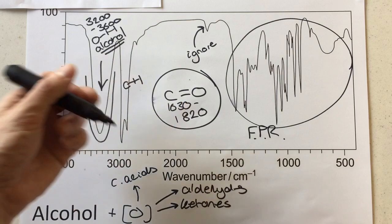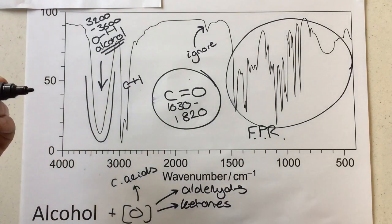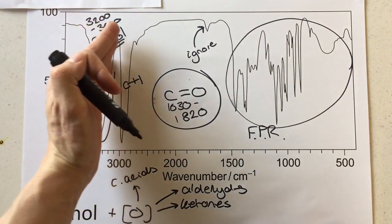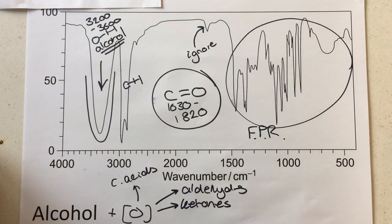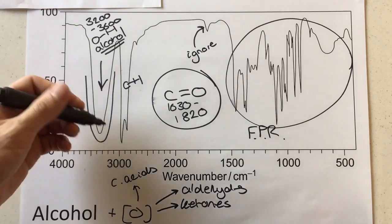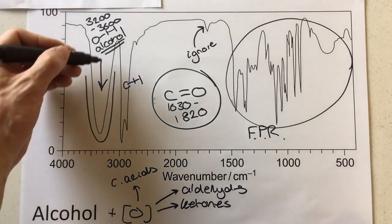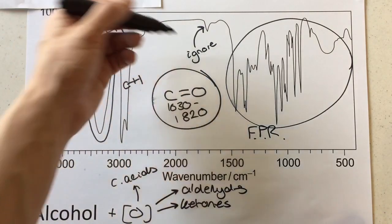But if it was a carboxylic acid, we would notice that this OH would perhaps move to the right and the C double bond O peak would appear. So two ways that we can tell that this alcohol hasn't oxidized just yet is that we still have the OH and we don't have a C double bond O.